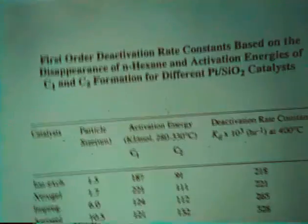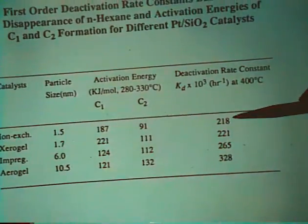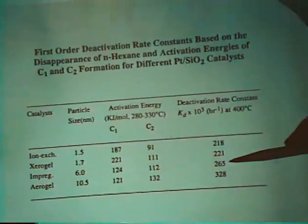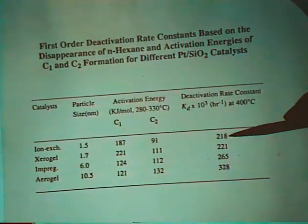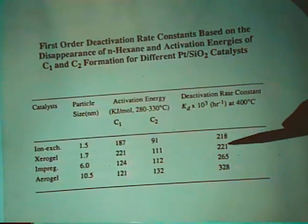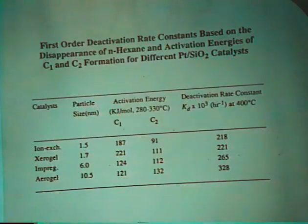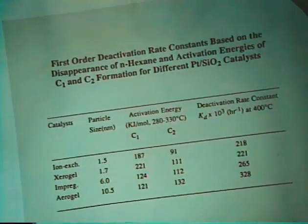I also measured the first-order deactivation rate constant. And you can see for the ion exchange materials, it's very similar to the xerogel within experimental error. The deactivation is not that different from our catalyst compared to the ion exchange materials.